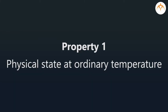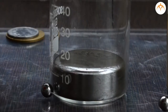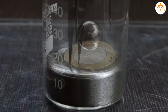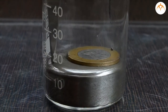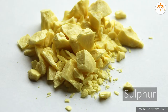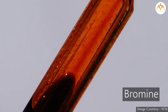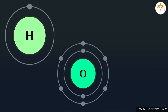Physical state at ordinary temperature: Metals are generally found in solid state, but mercury and gallium are exceptions. Though they are metals, they are found in liquid state at room temperature. However, non-metals are found in all three states — solid: carbon, sulphur, phosphorus; liquid: bromine; gas: hydrogen, oxygen, nitrogen.